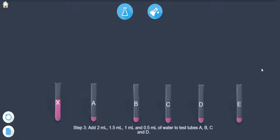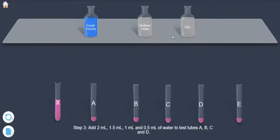Add 2 ml, 1.5 ml, 1 ml, and 0.5 ml of water to test tubes A, B, C and E.